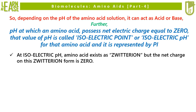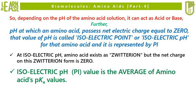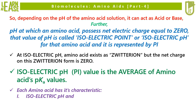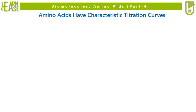At the isoelectric pH, the amino acid exists as a zwitterion but the net charge on this zwitterion form is zero. The isoelectric pH value is the average of the amino acid's pKa values and is denoted by Pi. Each amino acid has its characteristic isoelectric pH and pKa values. Amino acids have characteristic titration curves.